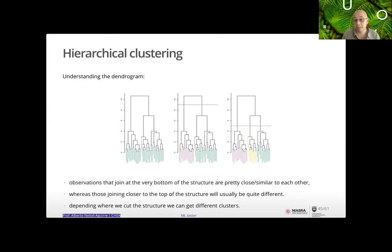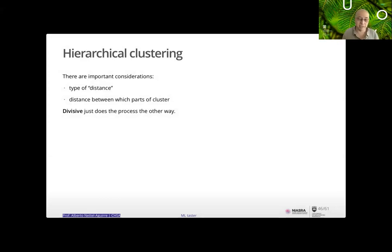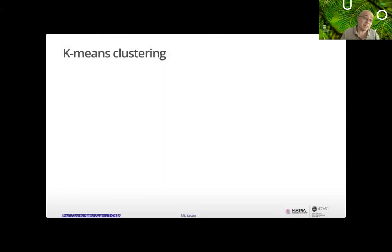Important considerations include the type of distance used and the notion of distance between clusters — when you have two dots it's straightforward, but with a cluster do you look at the center, or the farthest-apart parts? These choices define the different types of hierarchical clustering. There's also divisive hierarchical clustering, which works the opposite way: start with one big cluster and at each step remove the least similar point.